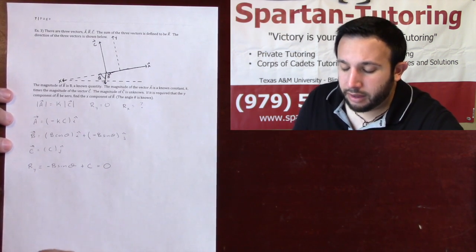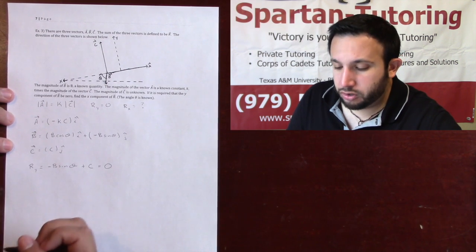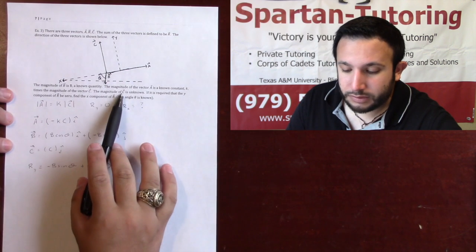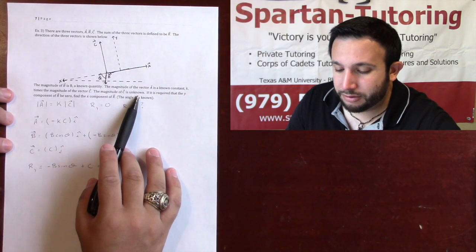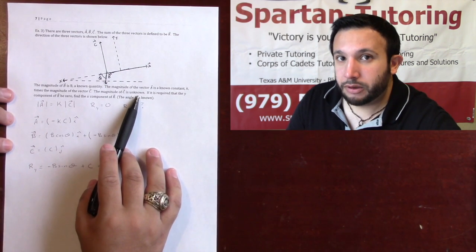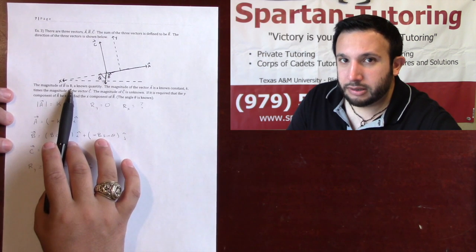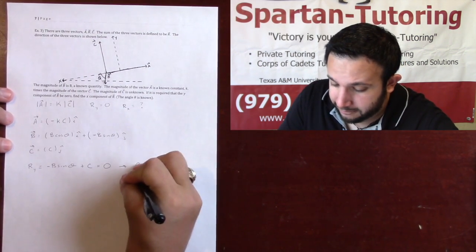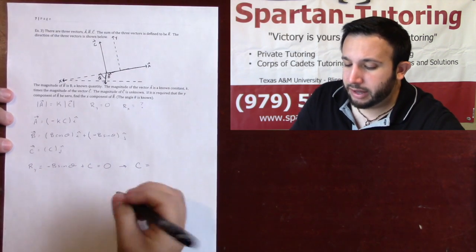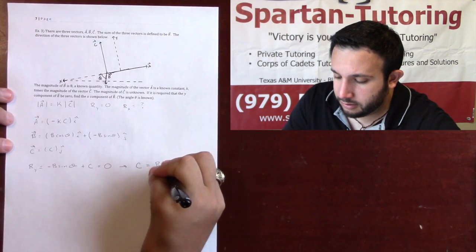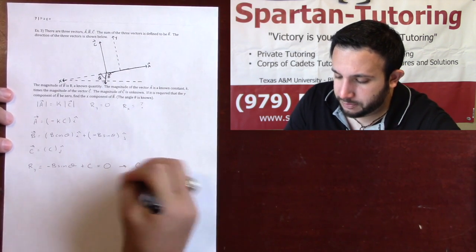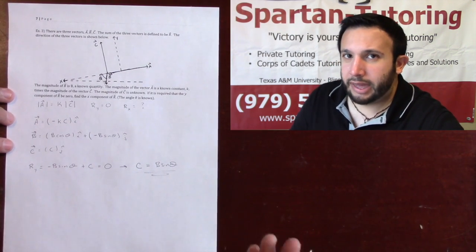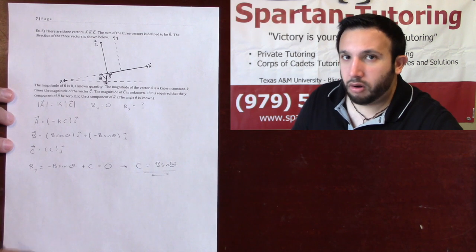This is important — we need to make sure the final answer is in terms of known quantities. The magnitude of C is unknown, but B is known. So from Ry = 0, we can solve: the magnitude of C equals b sine theta. Now we can express our answer in terms of known quantities.